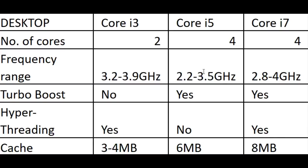Hey guys, welcome back to How To Tech. This video is about the differences between Intel CPUs — the Core i3, Core i5, and Core i7. We're going to discuss the main categories that make these chips different. We're going to keep it basic and give you a general sense of what's different and why you pay different prices for these specific chips.